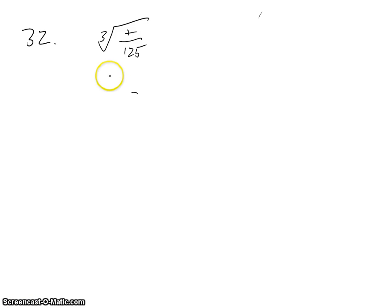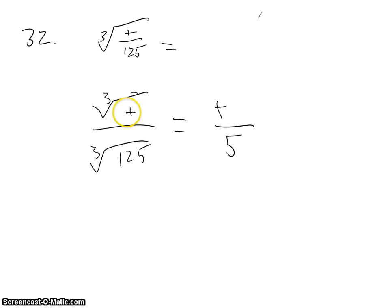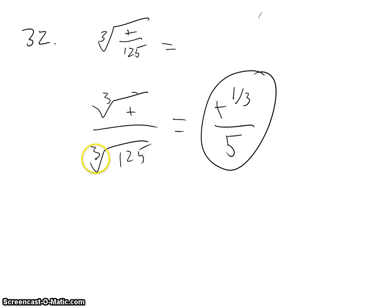The problem is the cube root of t over 125, so that would be equal to the cube root of t over the cube root of 125. The cube root of 125 is 5, and to simplify the top, it would be t to the 1/3rd, so your final answer is t to the 1/3rd over 5.